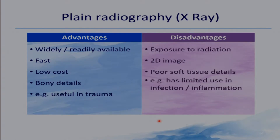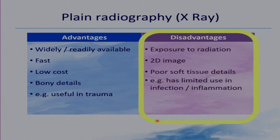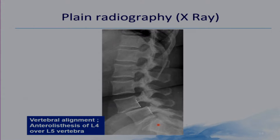When it comes to plain radiography, the advantages are that it is widely and readily available, fast, low-cost, and gives good bony details, making it very useful in trauma. The disadvantages are exposure to radiation, it gives only a 2D image and very poor soft tissue details, so it has limited use in infection or inflammation. Vertebral alignment can be easily assessed; for example, this X-ray shows anterolisthesis of L4 over L5 vertebra.